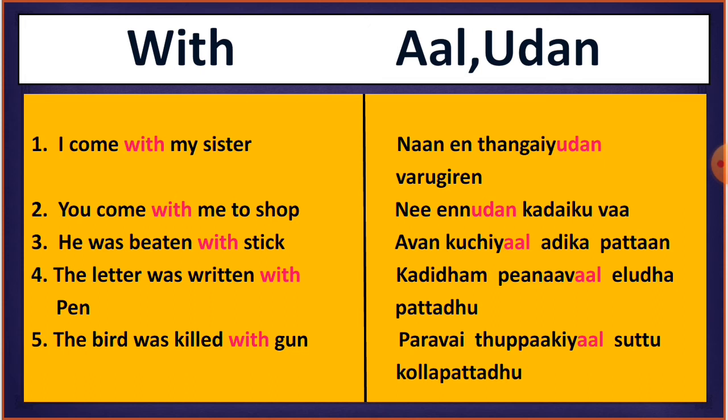The next example is: 'He was beaten with a stick.' In Tamil: 'Avan kuchiyal adikka pattaan.' 'Avan' means he, 'kuchiyal' means with stick, 'adikka pattaan' means was beaten. With the help of the stick he was beaten, so we use 'kuchiyal' — the stick with 'aal'.